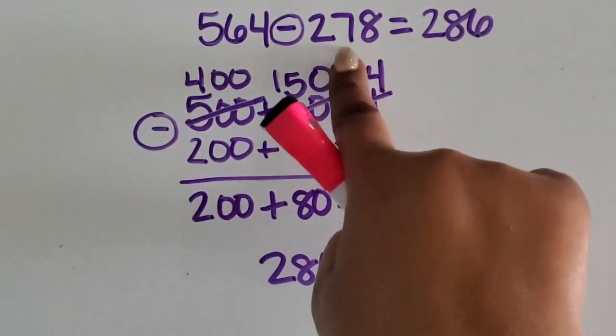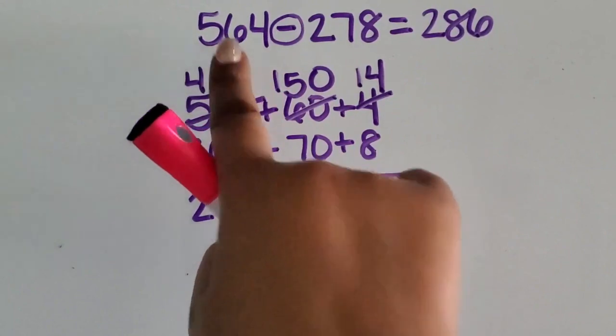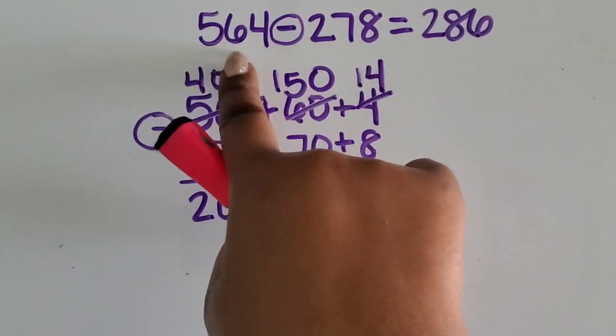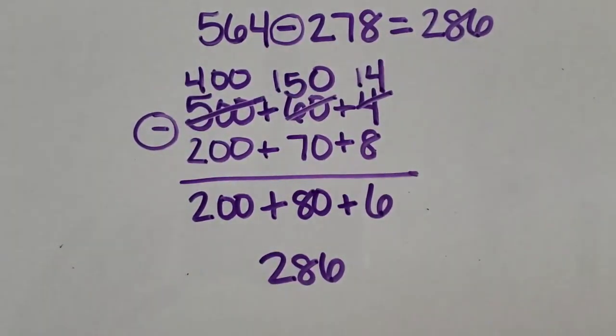We took one two-digit number and subtracted it from another, sorry, we took one three-digit number and subtracted it from another three-digit number using expanded form.